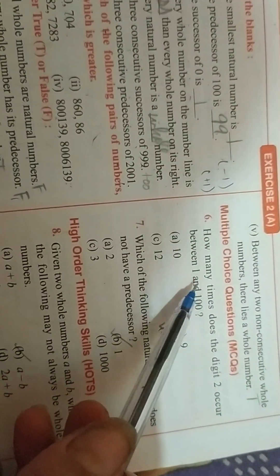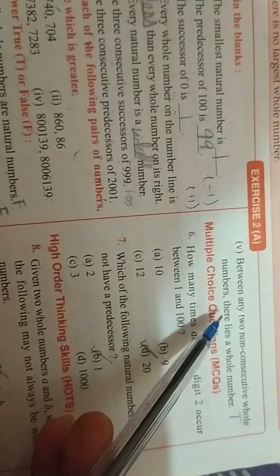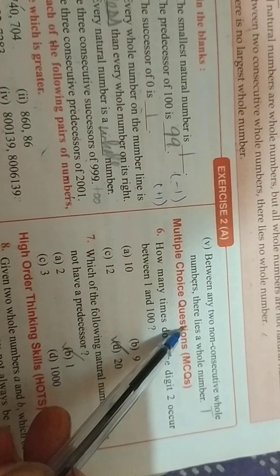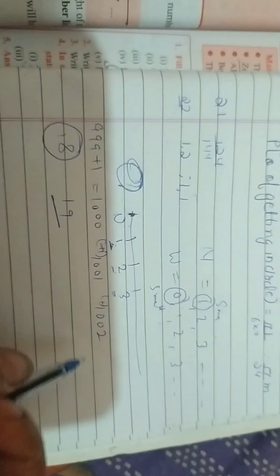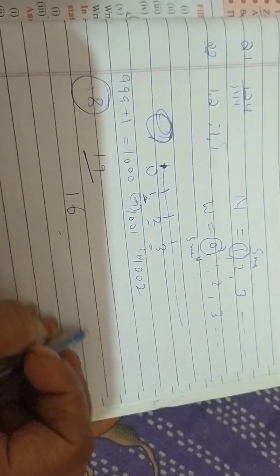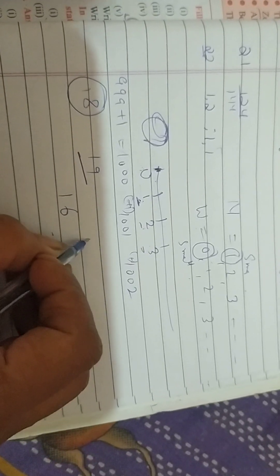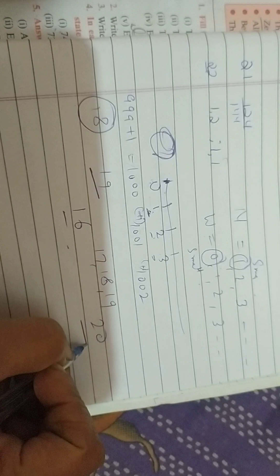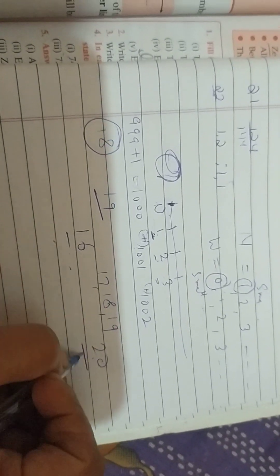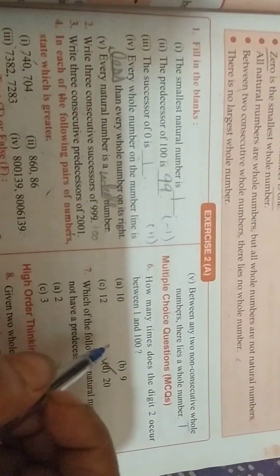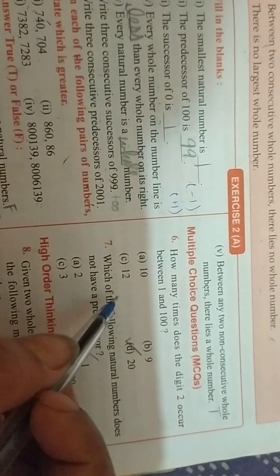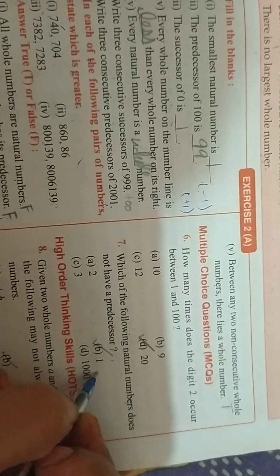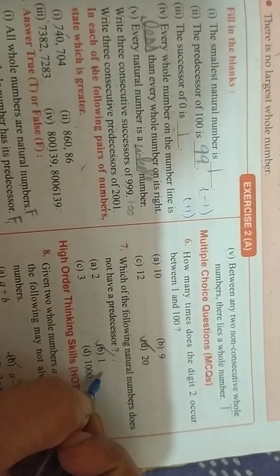Between any 2 non-consecutive whole numbers, there lies a whole number. Yes. Non-consecutive means, suppose we are having 16 and then second number 20. So, there are 3 numbers in between 17, 18, 19. They are non-consecutive numbers because they are not coming in continuity. Which of the following natural number does not have a predecessor? 1. Because natural number starts from 1.